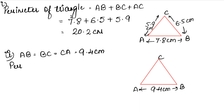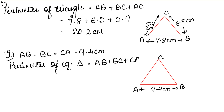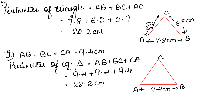Now we have to find the perimeter. Perimeter of an equilateral triangle: add all sides, which gives us 3 into side. So 9.4 plus 9.4 plus 9.4. Adding: 4 plus 4 plus 4 is 12, carry 1; 9 plus 9 plus 9 is 27, plus 1 carry is 28. So 28.2 cm is the answer.